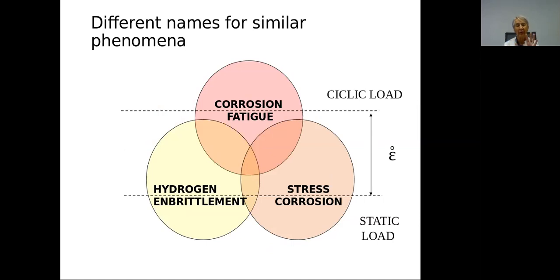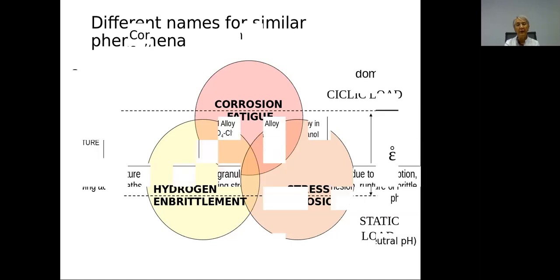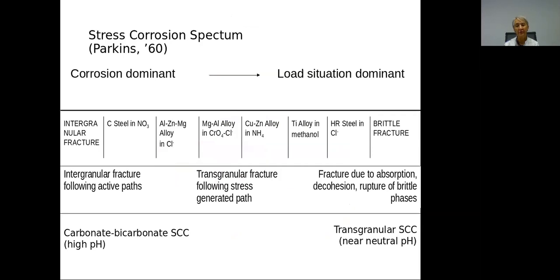Sometimes we also speak about hydrogen embrittlement, which is the most important mechanism but can have many different aspects depending on how the load is applied. One thing I like to show is the stress corrosion spectrum as proposed by Parkins in the 1960s. Parkins spoke about having two possibilities at the two extremes of a scale: corrosion dominant or load dominant. You can see different families of materials, environments, and different kinds of mechanisms.